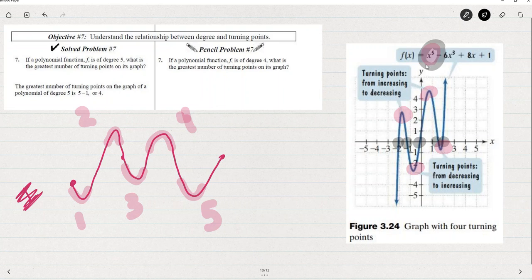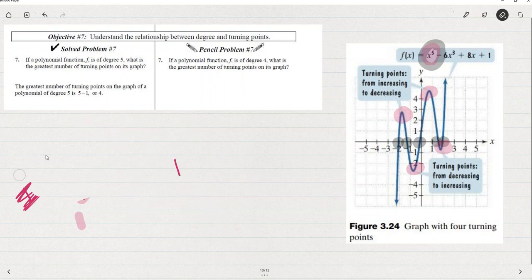will tell us that there are at most five zeros. Now, why do I say at most? We're not guaranteed that there's five. For example, if we look at x squared, the parabola,